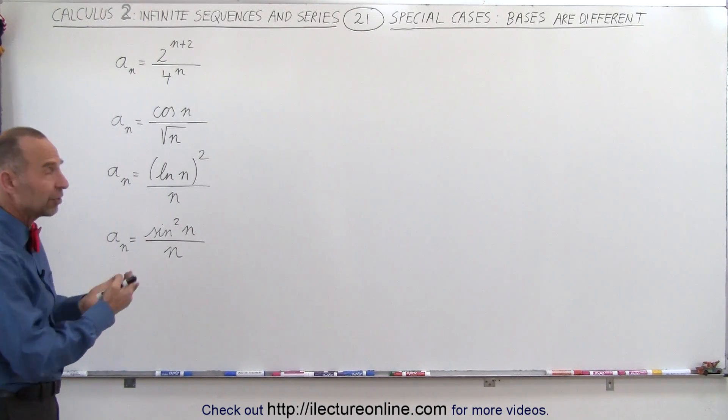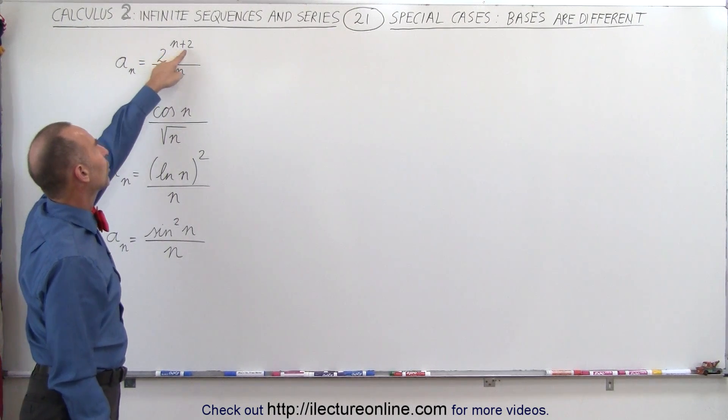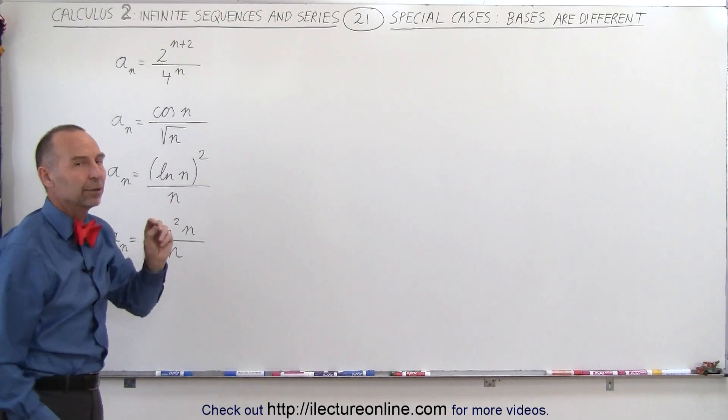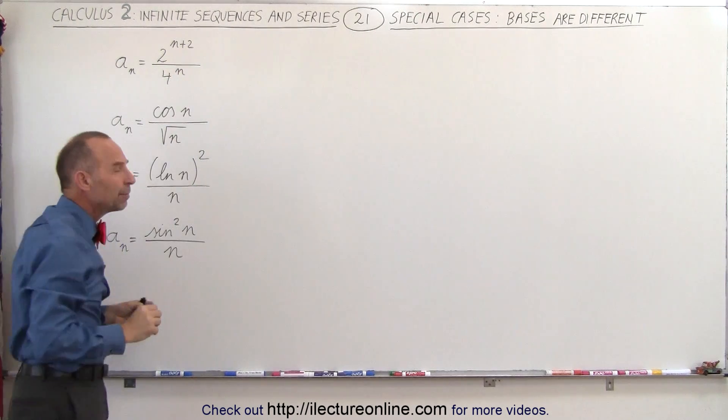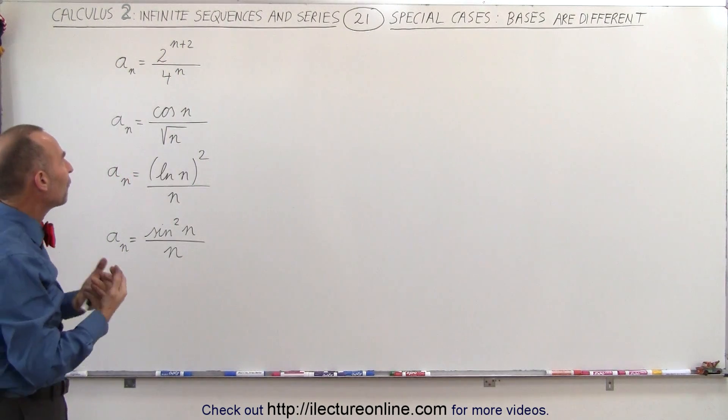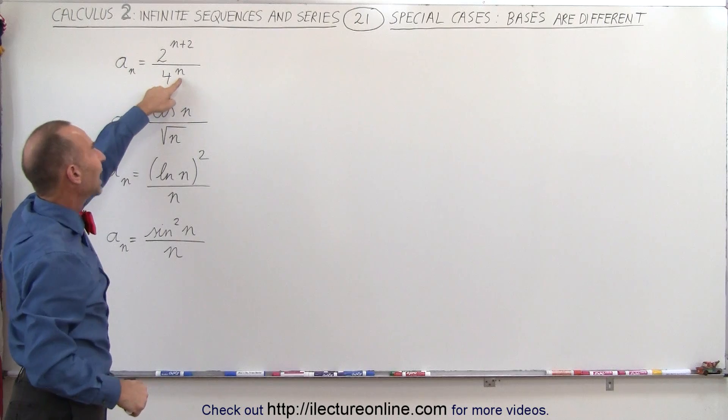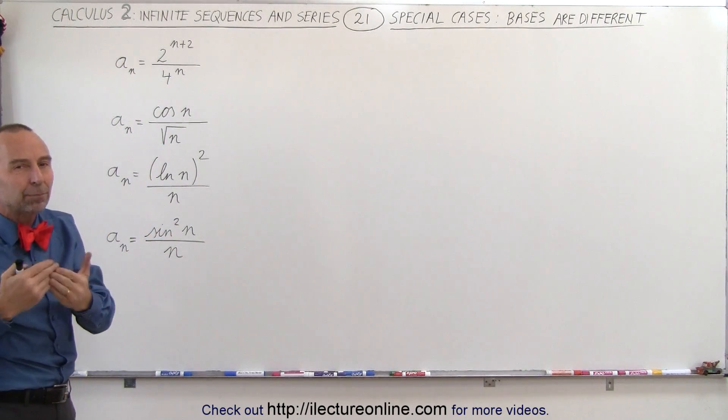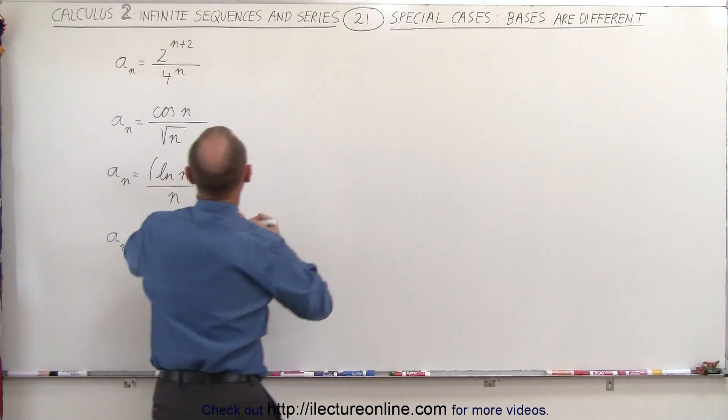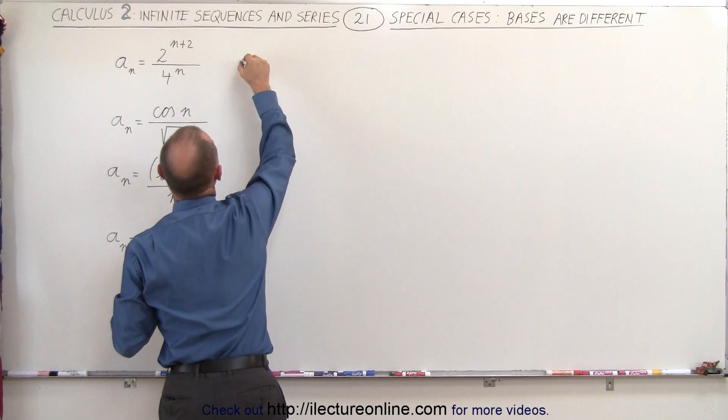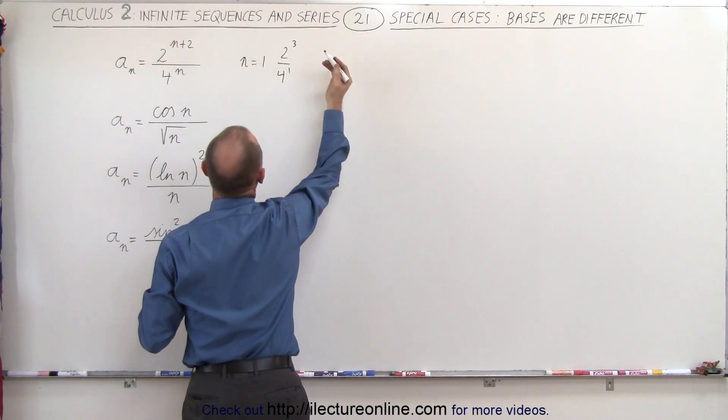Sometimes they're rather deceiving. For example, here we have in the numerator 2 to the n plus 2 power, and in the denominator 4 to the n power. You may think that because the exponents here are bigger than the exponents in the denominator, that the numerator will grow faster. But that's not the case, because the base here is twice the size of this base.